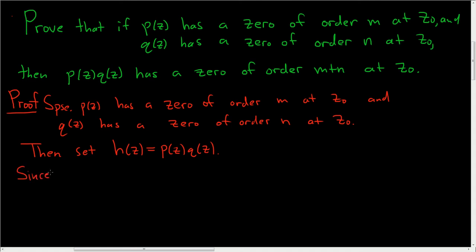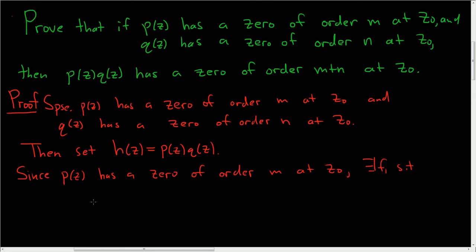Since P of Z has a zero of order M at Z naught, that means there exists a polynomial function, we'll call it F1, such that P of Z is equal to Z minus Z naught to the M times F sub 1 of Z, where F1 of Z naught is not equal to zero.